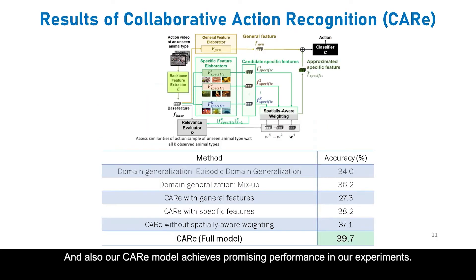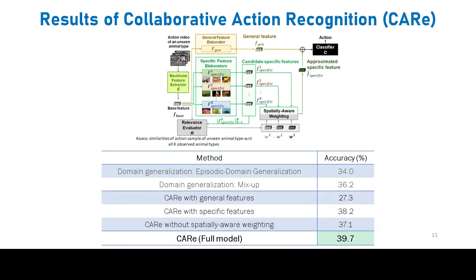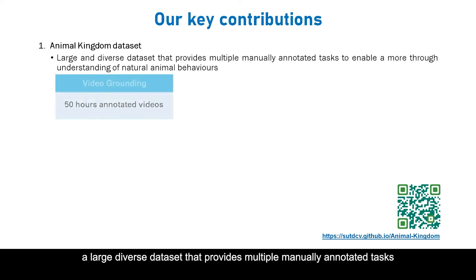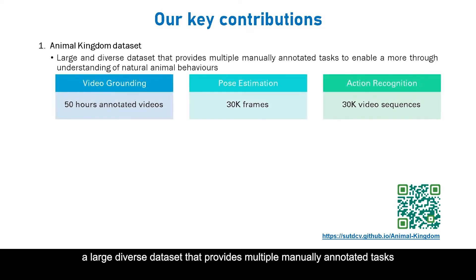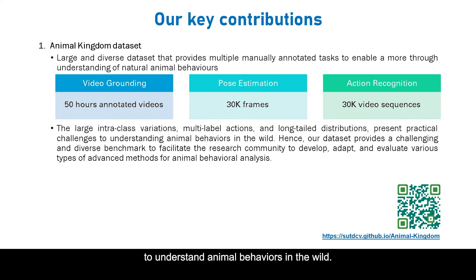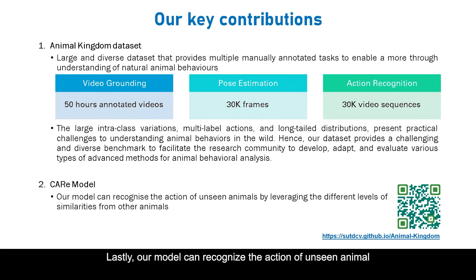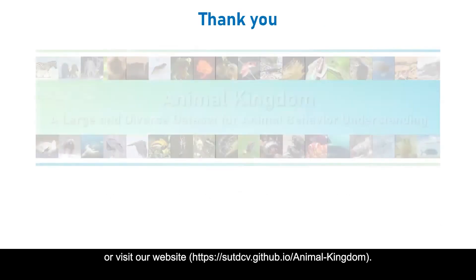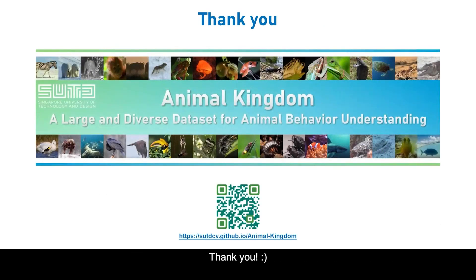Our CARE model achieved promising performance in our experiments. To summarise our contributions: a large, diverse dataset with multiple manually annotated tasks enables a more thorough understanding of animal behaviour. Large intra-class variation, multi-label actions, and long-tail distribution present practical challenges for understanding animal behaviour in the real world. Lastly, our model can recognise the actions of unseen animals by leveraging different levels of similarity from other animals. If you are interested in our dataset or code, you may scan the QR code or visit our website.